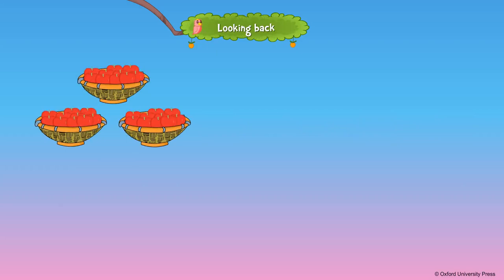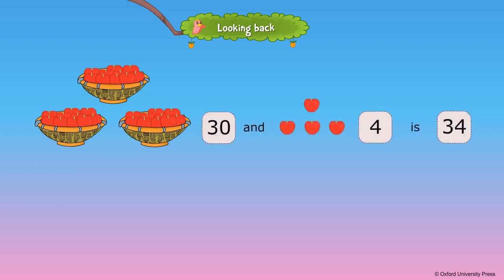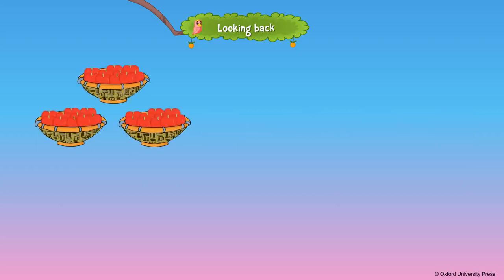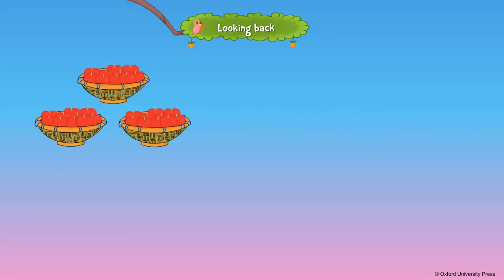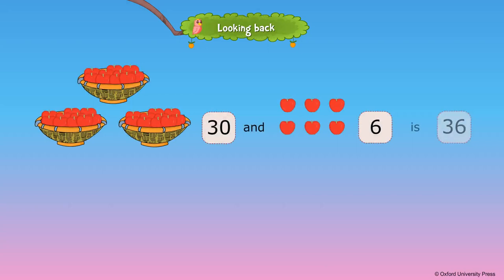If four more apples are added, we will have 34 apples. 30 and 4 is 34. If five more apples are added, we will have 35 apples. 30 and 5 is 35. If six more apples are added, we will have 36 apples. 30 and 6 is 36.